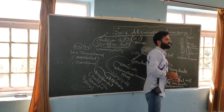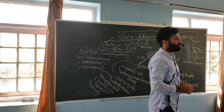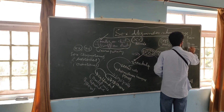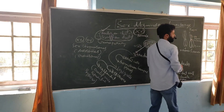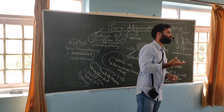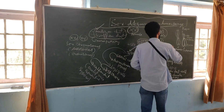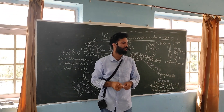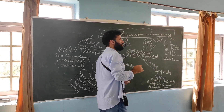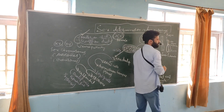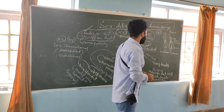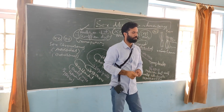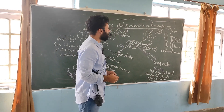Y chromosome makes the difference. The Y chromosome is the smallest chromosome in the human body, having the least number of genes. This chromosome is responsible for the development of the male. The gene present on the Y chromosome is called the SRY gene — Sex Determining Region of Y, also called the testis determining factor.